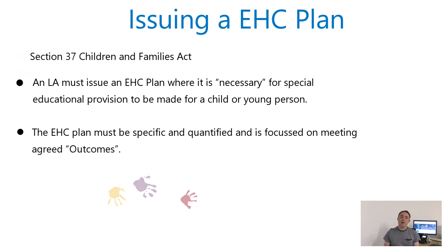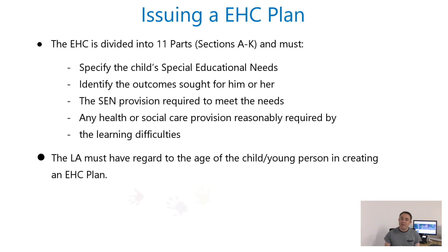The EHC plan itself, when you first receive it, can be quite a cumbersome document. It's divided into 11 different sections, sections A to K. The law requires the local authority in those sections to specify the child's special educational needs — seen in section B — to identify the outcomes sought for the child in section E, the SEN provision required to meet the child's needs in section F, and any health and social care provision in sections C and D, with provision from health and social care specified in sections G and H.